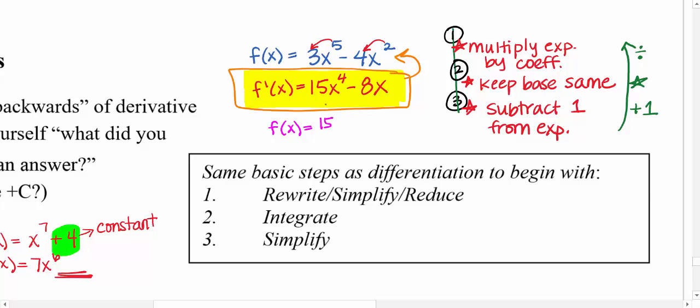I'm going to say I'm going to anti-derive this. I'm going to work backwards. So if I go backwards from the first derivative, I get the original. I'm going to keep the coefficient there just for a minute of 15. Keep your base the same.